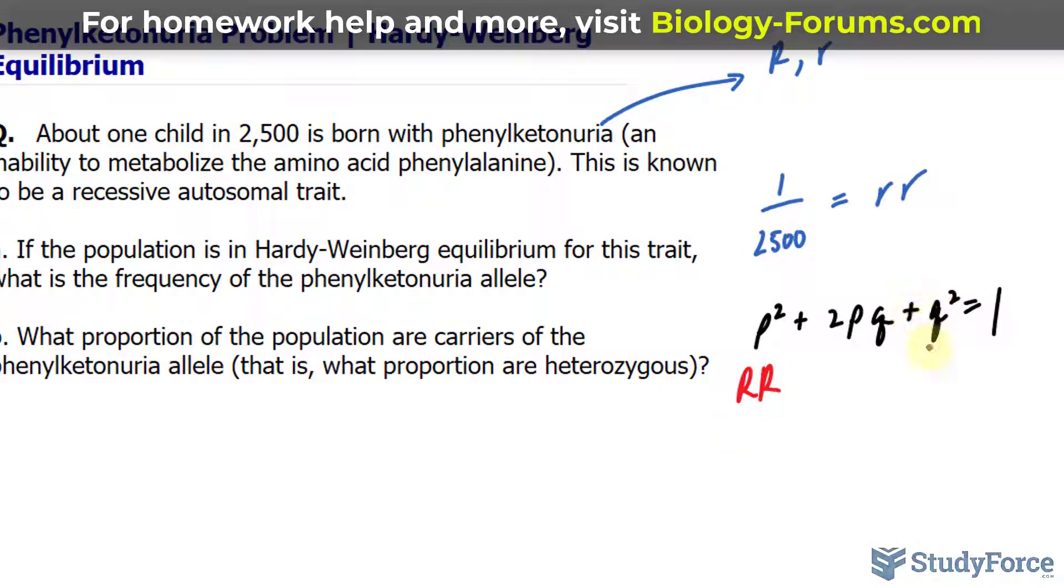p squared is for the genotype capital R capital R, and q squared is for the genotype little r little r. And the middle is for heterozygous, where you have a mix. We're not interested in that.